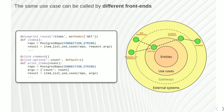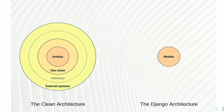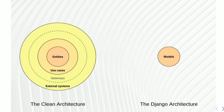I want to draw a comparison with an architecture many of you probably know: Django. Django is an amazing web framework, well-known in the Python community. It has a different architecture — it's not the clean architecture. Given the definition, it is unclean, but I don't want to say it's bad. I just want to draw the comparison.